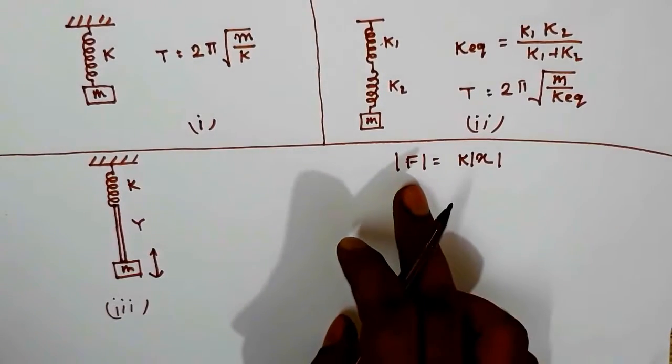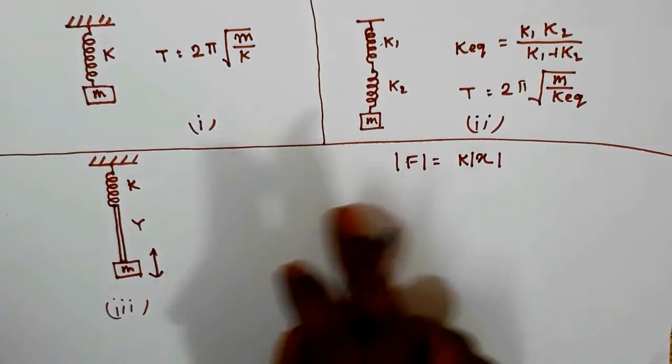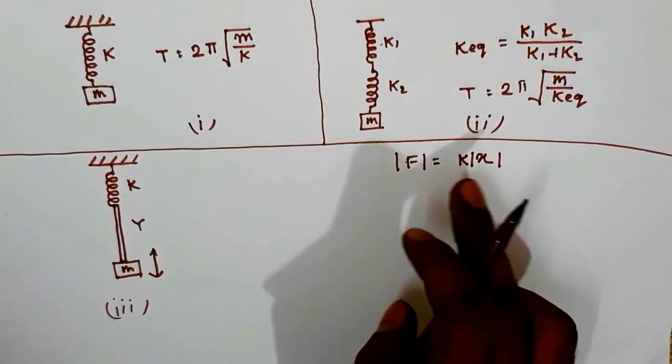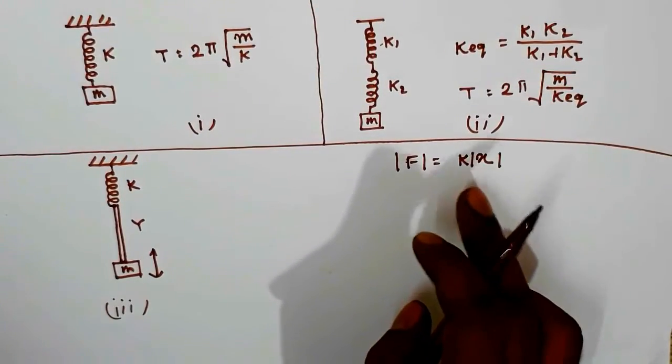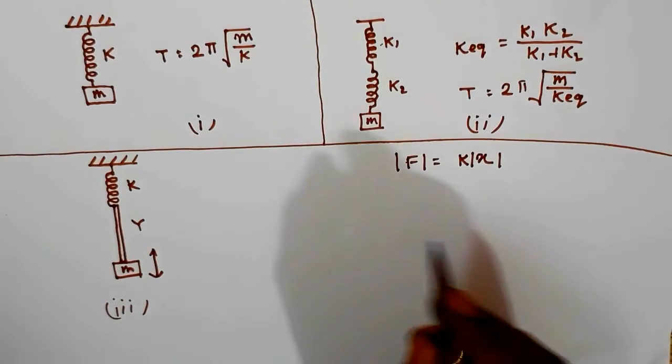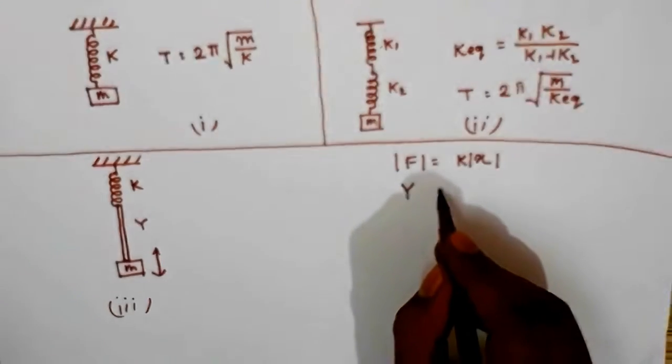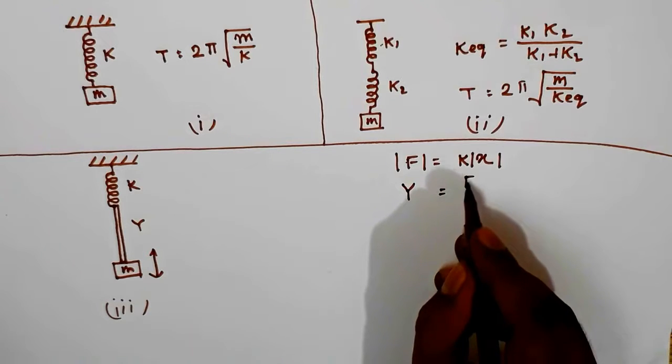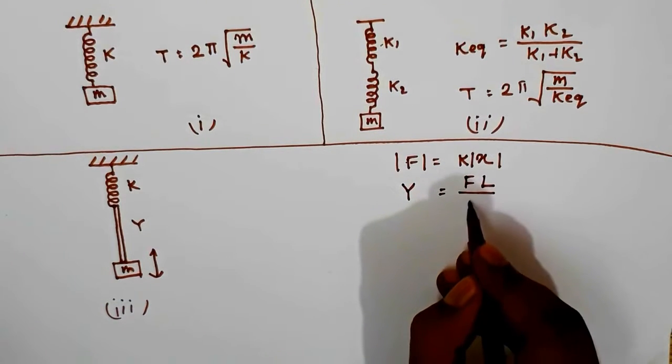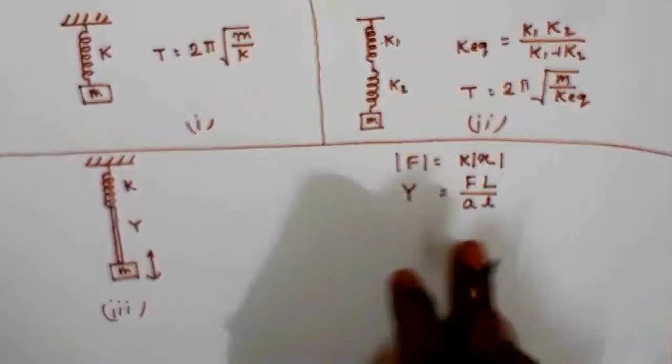For a spring we know that the force which generates in the spring is equal to kx. This is Hooke's law. We also have Hooke's law for an elastic material like a rubber band, and in that case we know that Young's modulus Y is equal to F*L/(A*l). Now I clarify these quantities here.